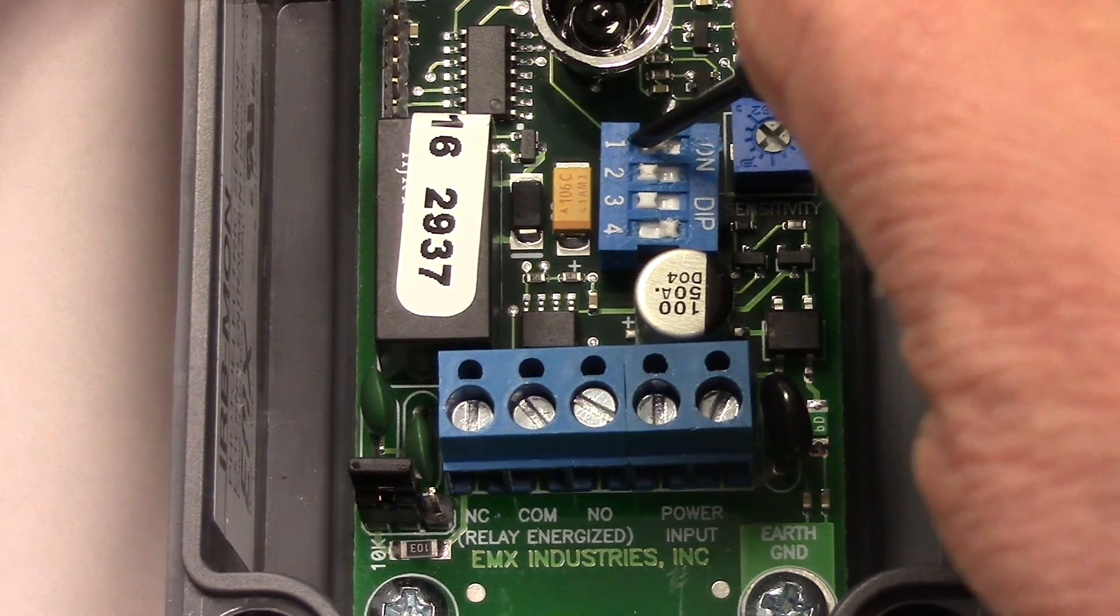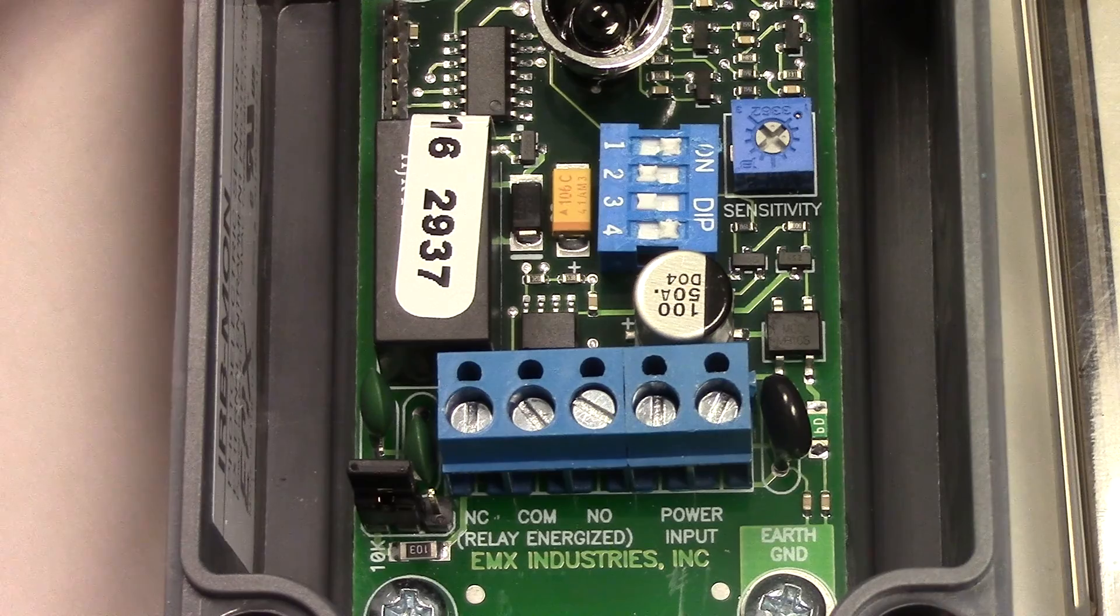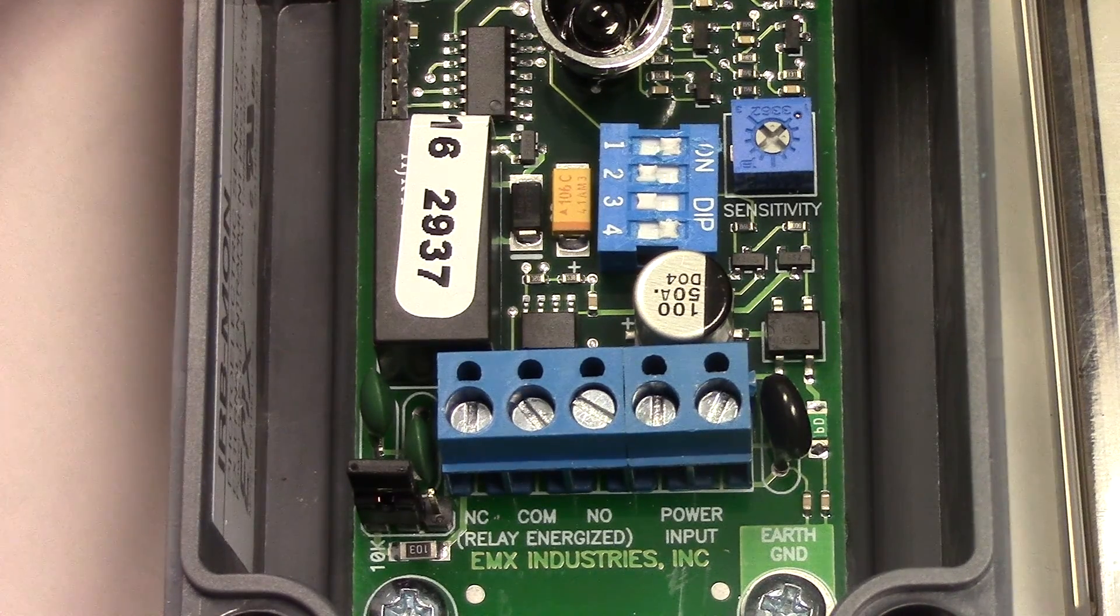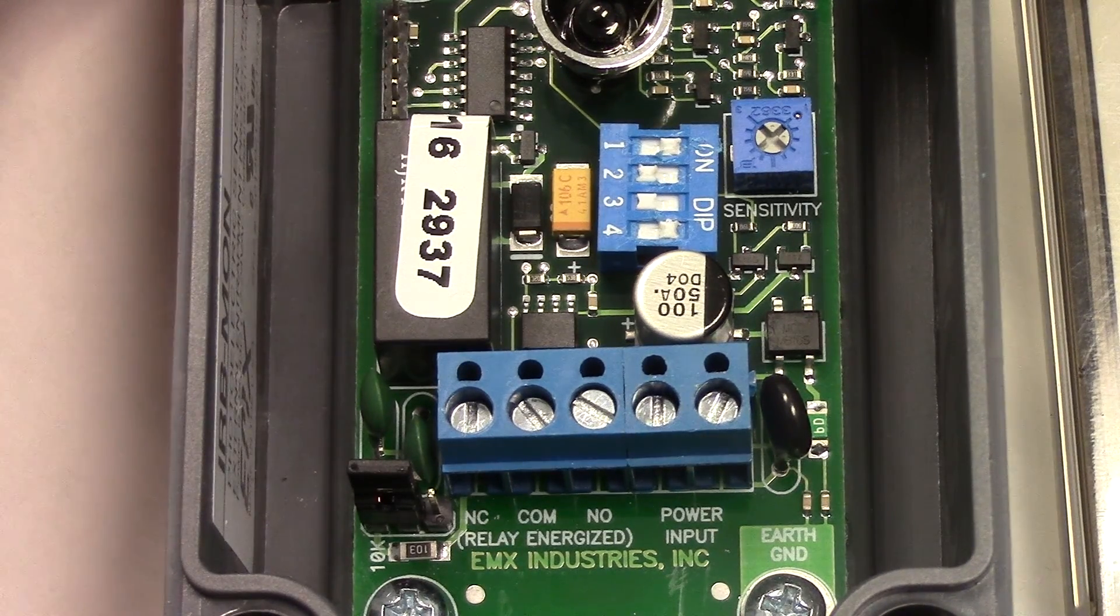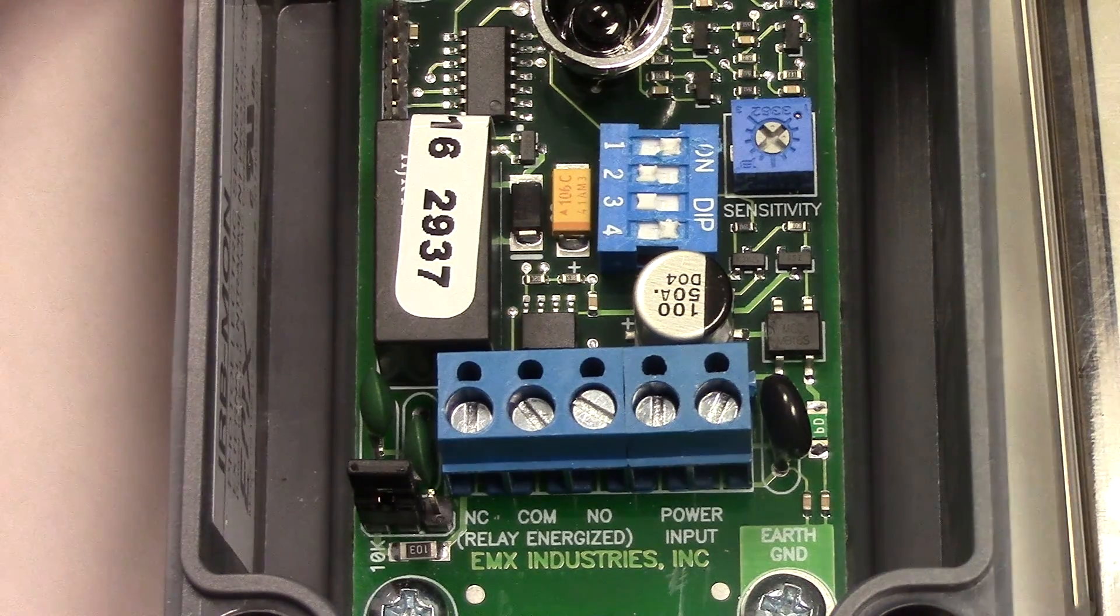When we turn position one on we have the two frequency pulse output option. This is 300 Hertz and zero Hertz.